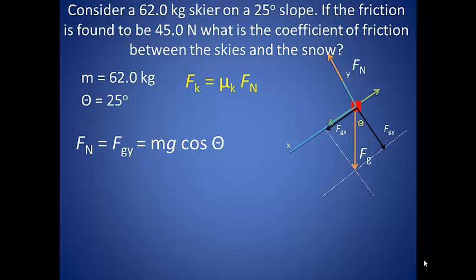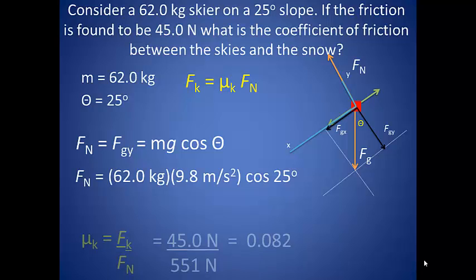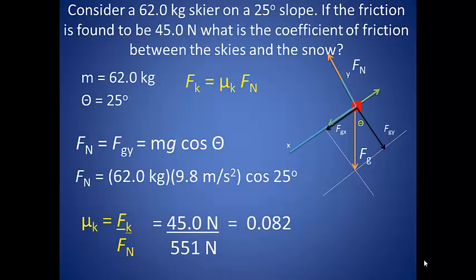Taking our weight by the cosine of 25, we get a normal force of 551 newtons. This we can plug into our kinetic friction equation. The force of friction was given to us at 45 newtons. So dividing the frictional force by the normal force gives us a coefficient of friction of 0.082.